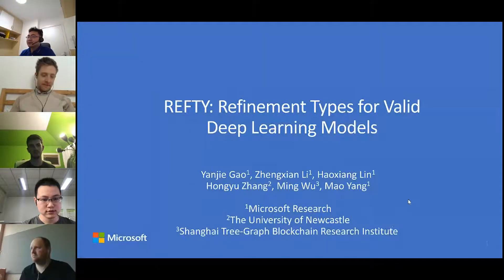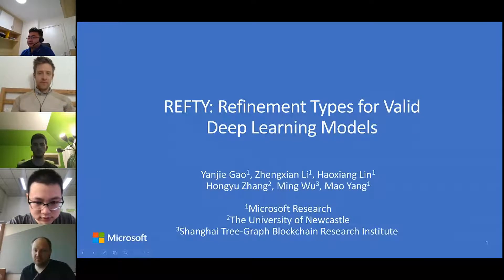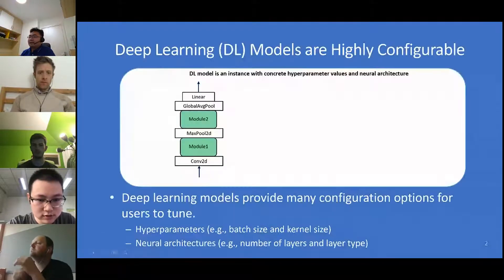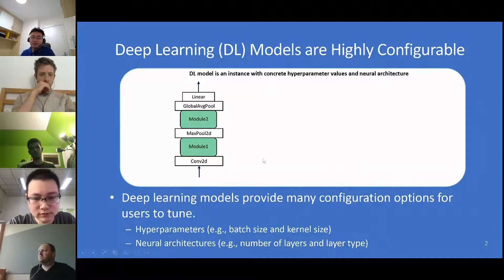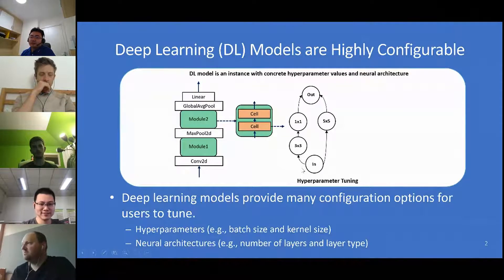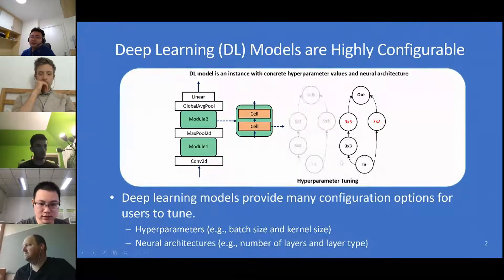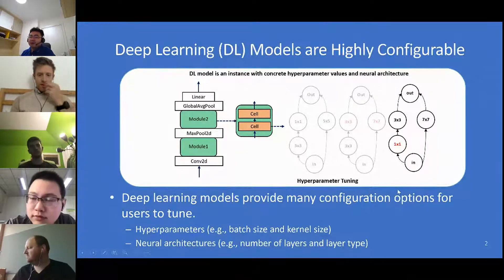Hello everyone, I'm Yanji. I'll introduce Rafety — Refinement Types for Valid Deep Learning Models. Deep learning models have many configuration options for users to tune, such as hyperparameters. For example, in a CNN model, each node might represent the kernel size of a Conv2D layer. Users can tune hyperparameters to train a new model for better performance, or tune neural architectures — for example, the subgraph structure — through what we call neural architecture search.